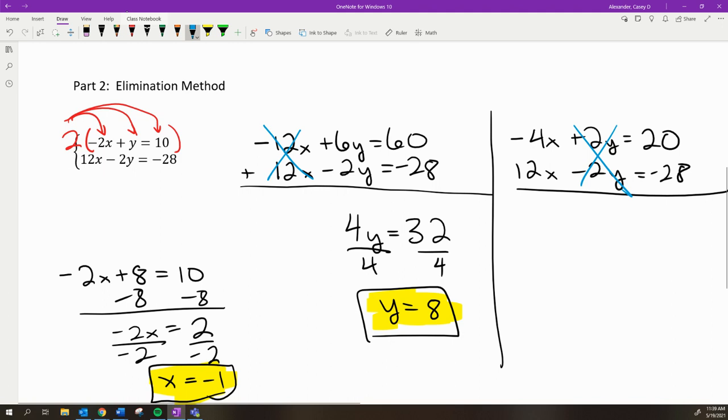There's no y term. -4x + 12x = 8x, and 20 + -28 = -8. Dividing by 8 gives x = -1.